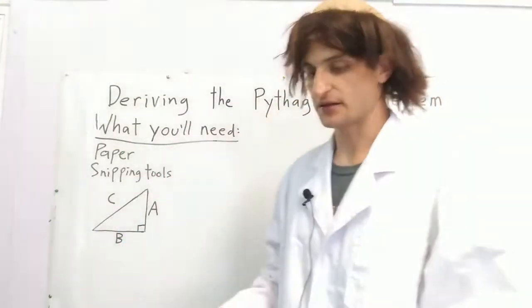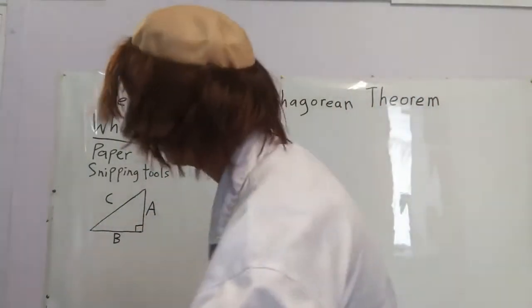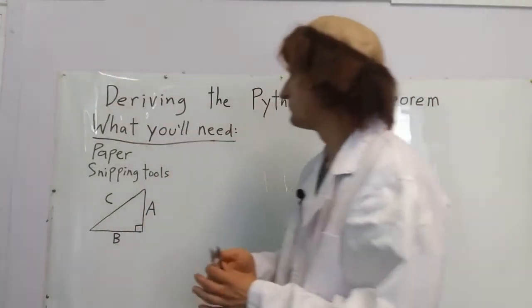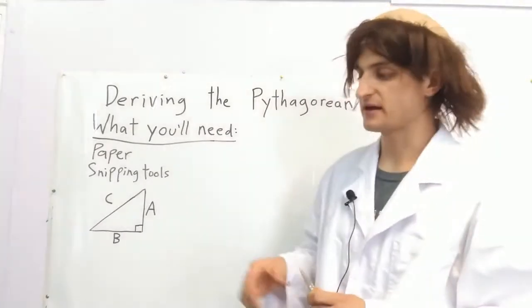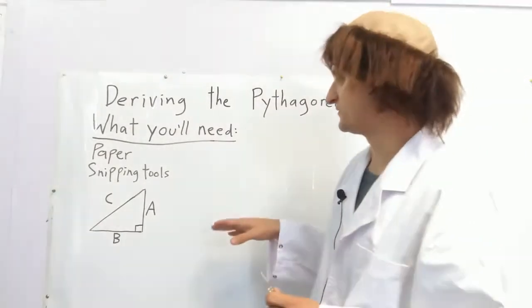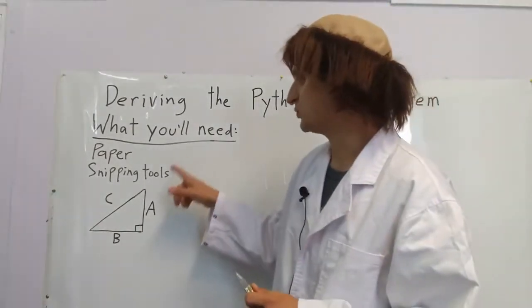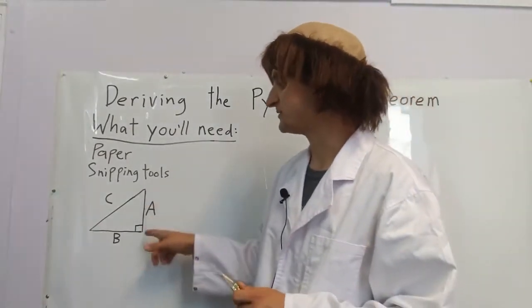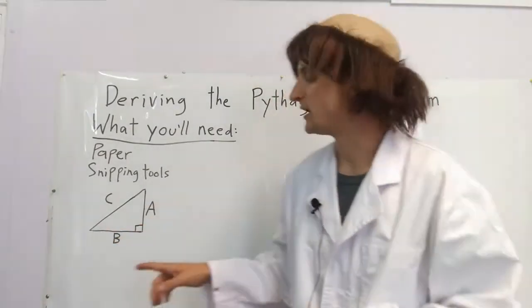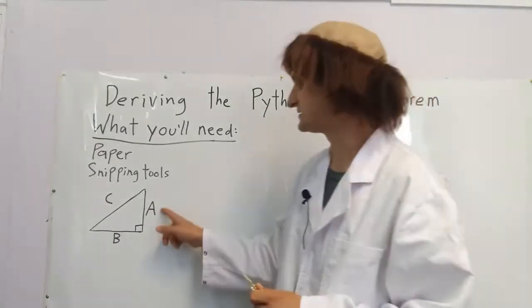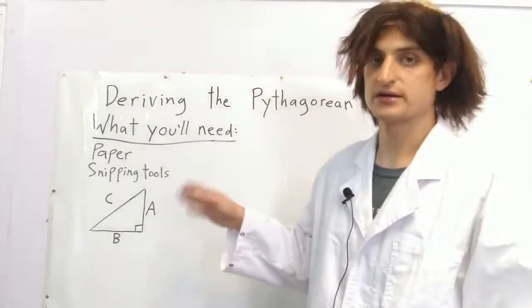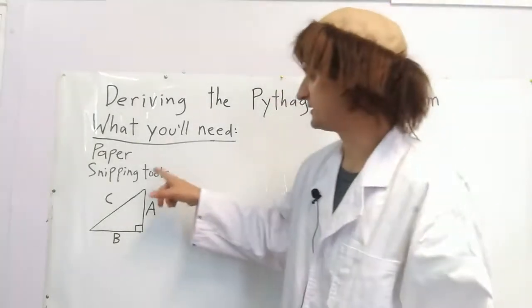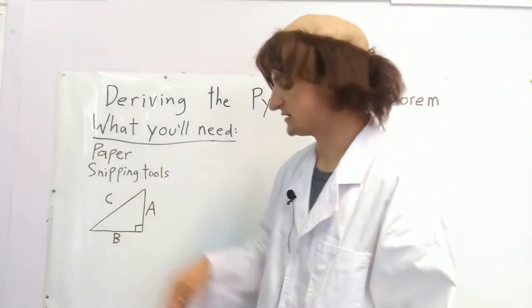Let's get ready to start. This problem dates back thousands of years, in which we have a right triangle and we know the sides A and B, and we're trying to find length C.